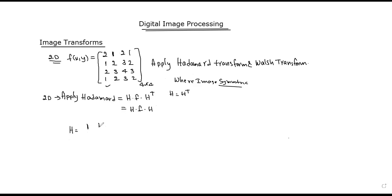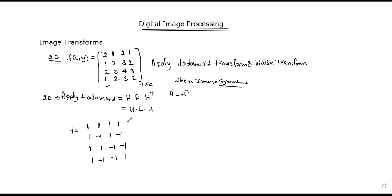The H matrix is: [1, 1, 1, -1]. Another form expands to: [1, 1, 1, 1], [1, -1, 1, -1], [1, 1, -1, -1], [1, -1, -1, 1].